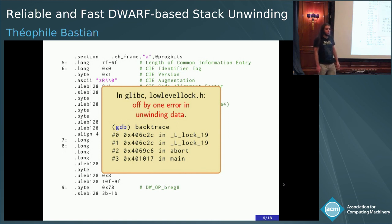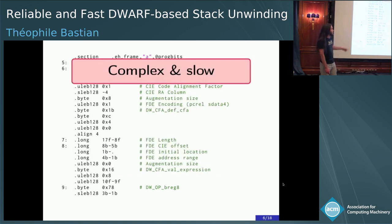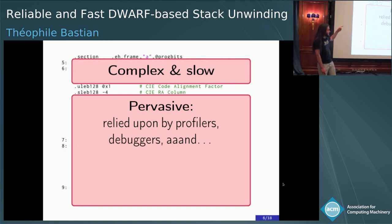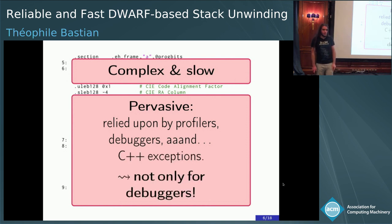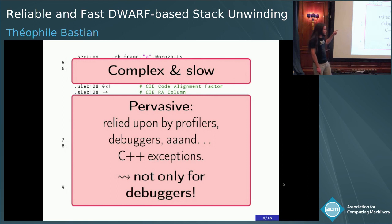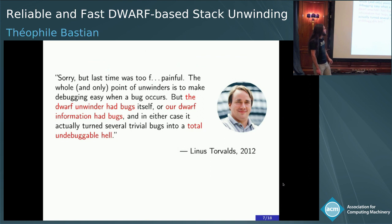A few years ago, someone on the kernel mailing list offered to use DWARF unwinding data instead of the base pointer in the Linux kernel. You have to notice that this is actually complex and slow — and even worse, it's pervasive. Debuggers use it, profilers use it, and even the C++ exception runtime. If you have an exception in C++, it triggers the unwinder, which looks at the DWARF bytecode and interprets it to catch your exception. Linus Torvalds' reply was: 'Sorry, but last time was too painful. The whole and only point of unwinders is to make debugging easy when a bug occurs. But the DWARF unwinder had bugs, and our DWARF information had bugs — total undebuggable hell.'